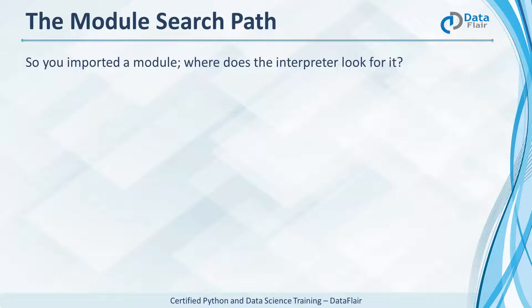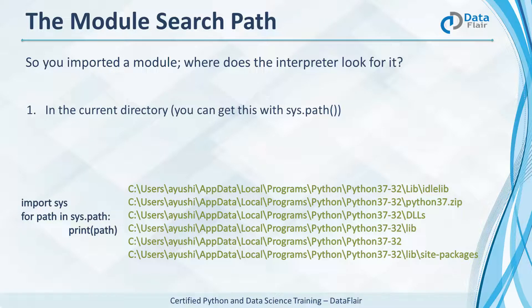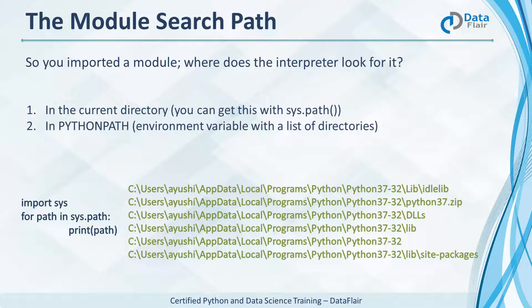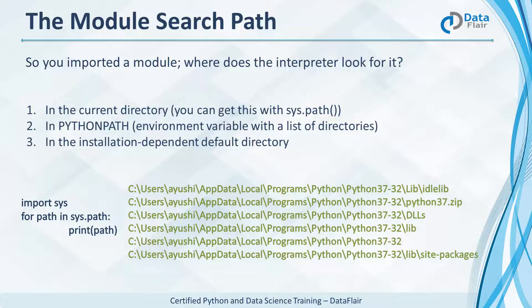Now you know how to import a module — but how does the interpreter know where to look for it? First it searches in the current directory; you can get this with sys.path. If it cannot find it there, it looks in PYTHONPATH, the environment variable with a list of directories it knows where to search. And finally, if all else fails, it looks in the default directory which is where you installed Python on your machine.